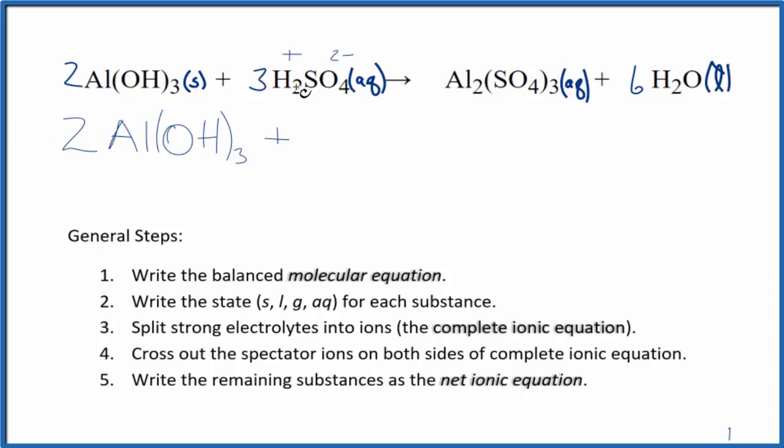So I have 3 times 2. That's 6 of the hydrogen ions. Then for the sulfate, I have 3 sulfate ions. And those are the reactants.